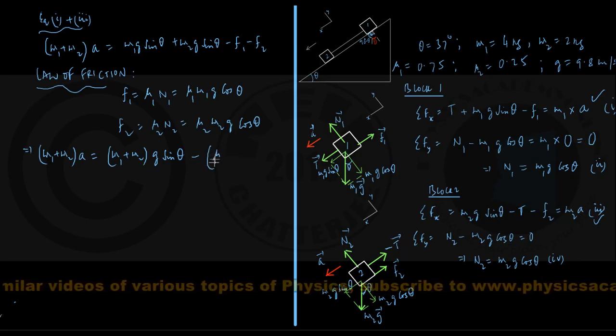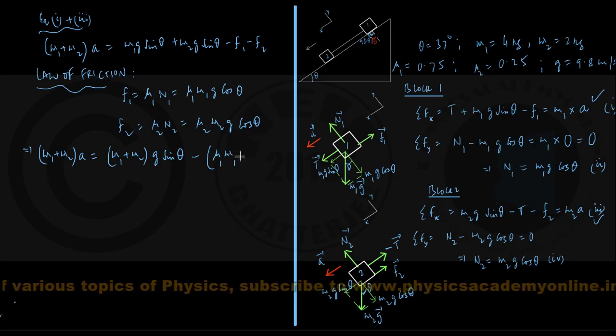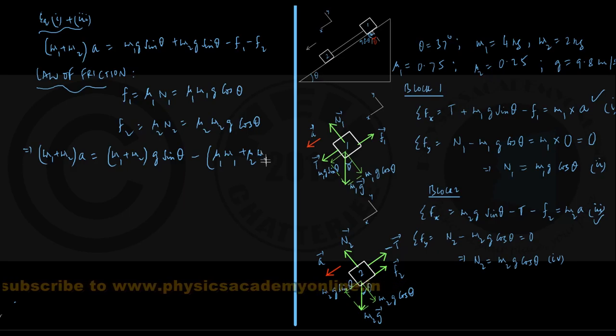well, let me write it here like this, mu1 m1 plus mu2 m2 inside bracket and outside I write g cos theta.